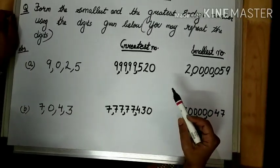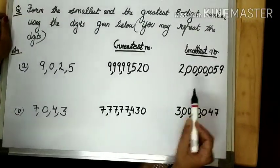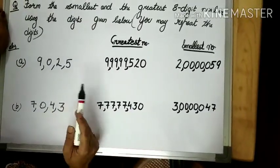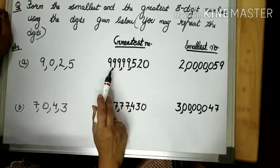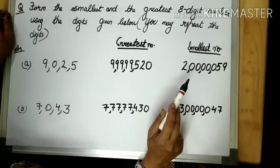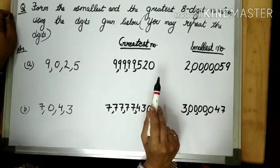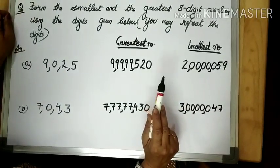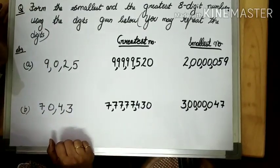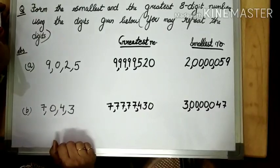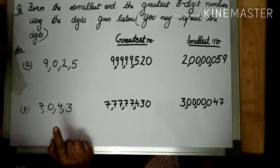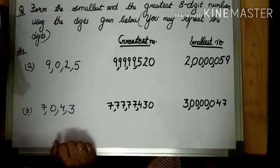So, in this way we can find the greatest and smallest number from the given digits when we can repeat the digits any number of times. For the greatest number, repeat the greatest digit. And in order to form the smallest number, repeat the smallest digit as many times as possible. Now children, as this chapter is completed — exercise 1.5 — some more questions I am giving you as homework. Do the assignment in your copy. And from the next class, we are going to start chapter 2, that is addition and subtraction of large numbers. I am also giving the answers of the previous assignment as PDF.